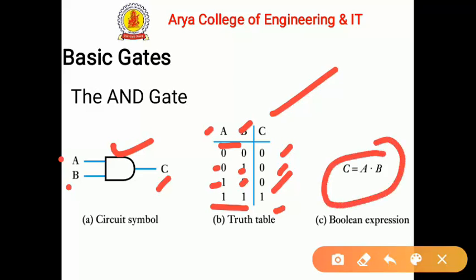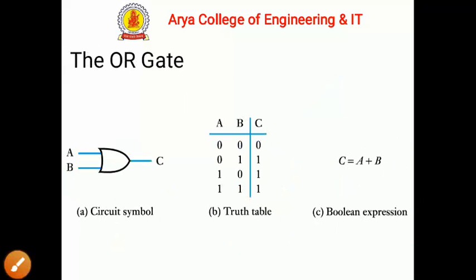The Boolean expression for the AND gate is C equals A dot B. The AND gate is represented by the dot product, so C = A·B. We get a high logic output in only one condition: when both inputs are high. This covers the AND gate's circuit symbol, truth table, and Boolean expression.